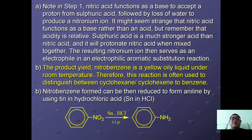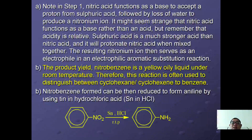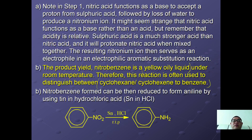In step one, nitric acid functions as a base to accept a proton from sulfuric acid, followed by loss of water to form the nitronium ion. This may seem strange since nitric acid is normally an acid, but acidity is relative — sulfuric acid is much stronger than nitric acid, so it deprotonates nitric acid. Nitrobenzene is a yellow oily liquid at room temperature and pressure, and this reaction is often used to distinguish cyclohexane from benzene.